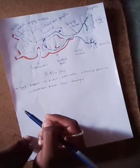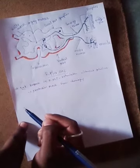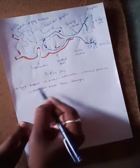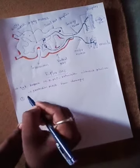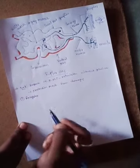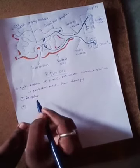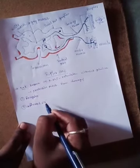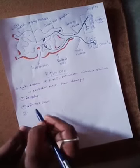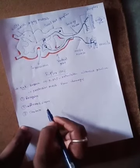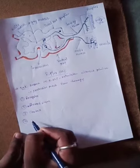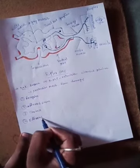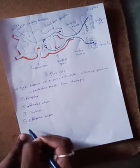This is the autonomic nervous pathway for the reflex action. The reflex arc includes five components. Number one is the receptor, number two is the afferent nerve, and number three is the center.